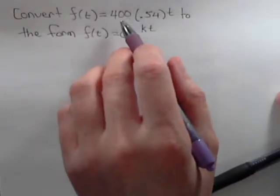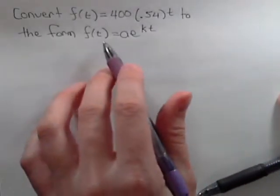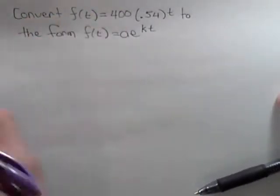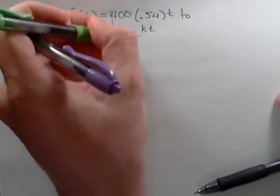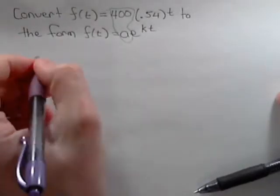Convert f(t) = 400(0.54)^t to the form f(t) = ae^(kt). Right away I see that the a and the 400 match up, so I don't need to worry about that.